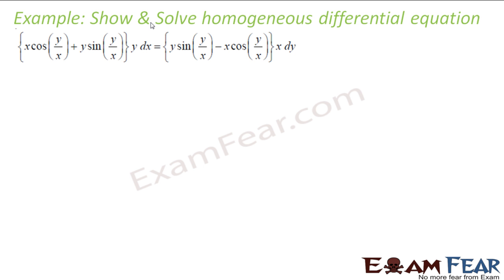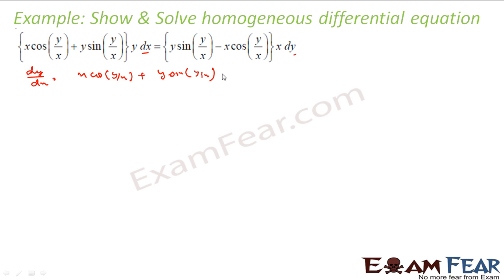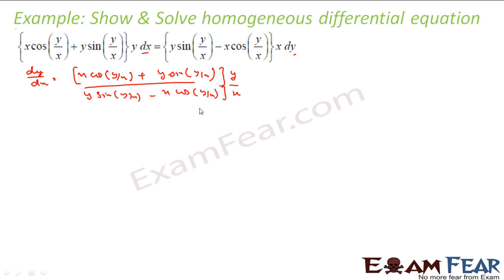Here also let's write dy by dx. So what is the value of dy by dx? You have dy here, dx here. So dy by dx will come out to be x cos(y/x) plus y sin(y/x), the whole thing into y, divided by y sin(y/x) minus x cos(y/x) into x. That's what you get.